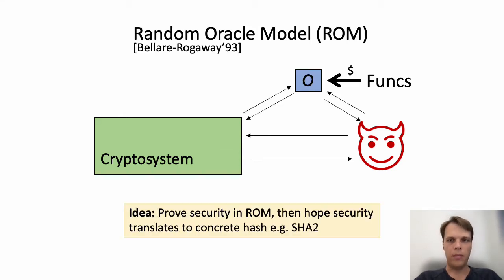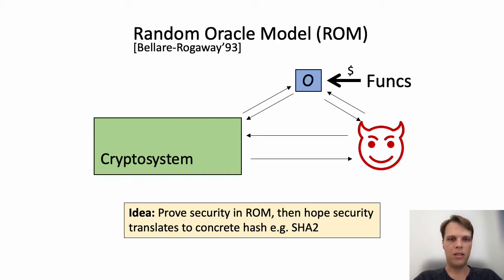One proposal by Bellare and Rogaway is the famous Random Oracle Model, or ROM. Here, the hash function is modeled as a uniformly random function O that can only be accessed via queries. The idea is to prove security in this idealized model, giving at least some assurance that we didn't totally mess up the cryptosystem design. Then we just pray that security holds when we replace the random oracle O with a concrete hash function, say SHA-2.